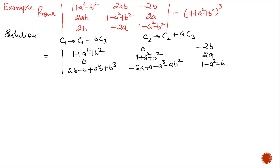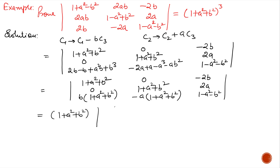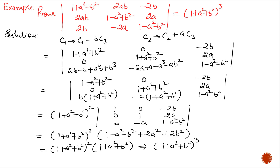When we simplify, the first column gives (1+a²+b²), 0, and b(1+a²+b²). The second column gives 0, (1+a²+b²), and -a(1+a²+b²). The third column remains. Now taking (1+a²+b²) common from the first column and again from the second column, and expanding along the first column, we get (1-a²-b²) + 2a² + 2b², which simplifies to (1+a²+b²). The final answer is (1+a²+b²)³, hence proved.